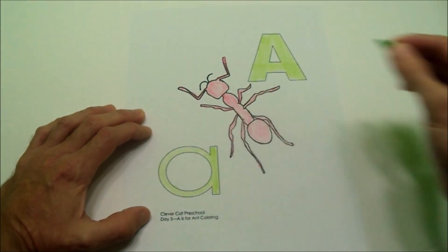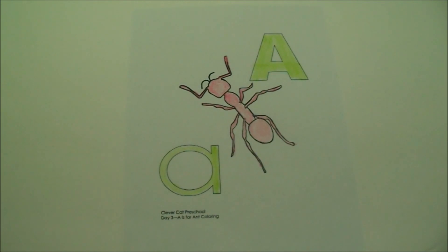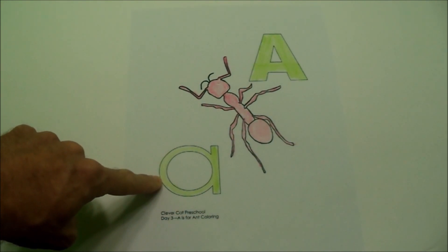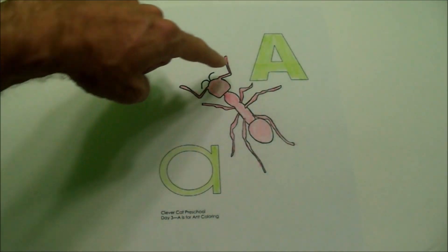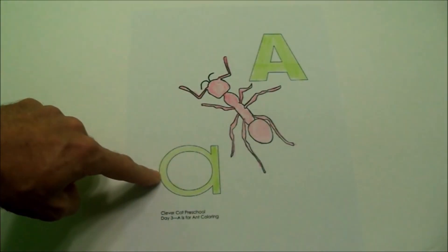Just like that. So, I have my red ant. What color did you use? Say your color out loud. What color did you make your little A? Or small A? What color did you make your big A? Or your tall A? Your big A. This A is bigger than this A.